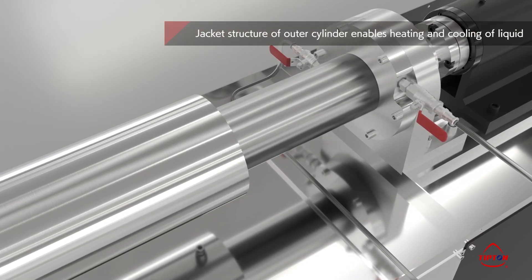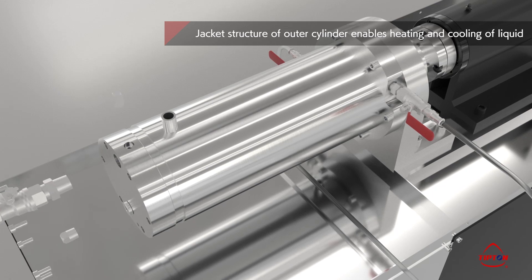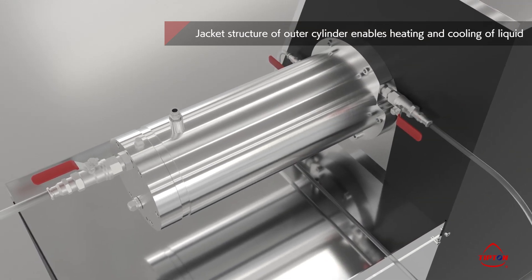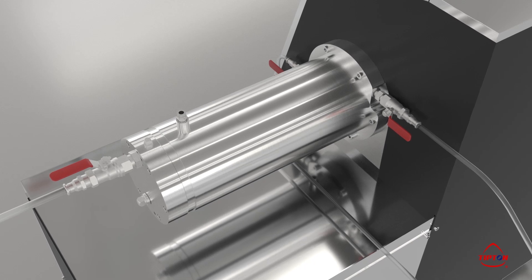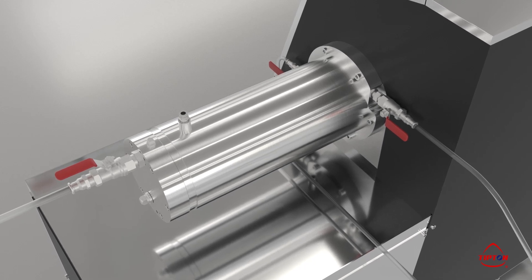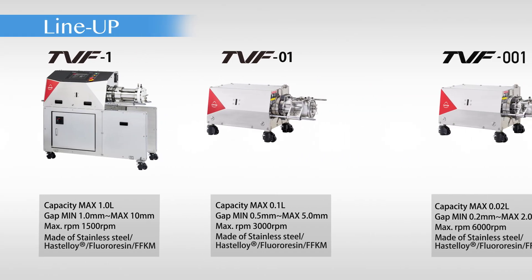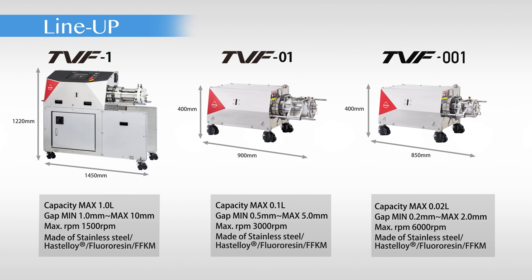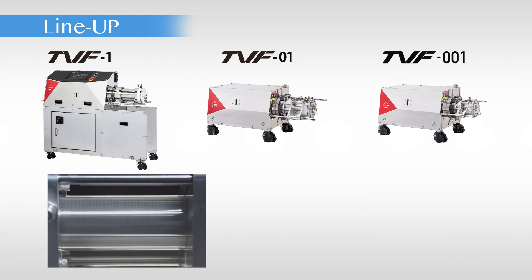The TVF has a narrow gap between the outer and inner cylinders, so its high area efficiency makes temperature adjustment easy — ideal for processing liquids that require strict temperature control. There are three models in the TVF lineup with different throughputs. In addition to stainless steel, the inner and outer cylinders can also be changed to Hastelloy or fluororesin. If a visual of the Taylor Vortex Flow is required, glass can be used for the outer cylinder to see the vortices. An option for a mass production model is also available.